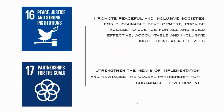Strategy Goal No. 16 — Peace, Justice and Strong Institutions — aims to promote peaceful and inclusive societies for sustainable development, provide access to justice for all, and build effective, accountable and inclusive institutions at all levels. Strategy Goal No. 17 — Partnerships for the Goals — aims to strengthen the means of implementation and revitalize the Global Partnership for Sustainable Development.